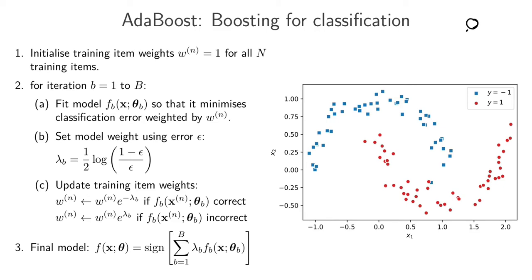A decision tree stub is a decision tree with just a single split — the simplest decision tree we can have. That will be our weak classifier. So let's step through the algorithm and see what happens.